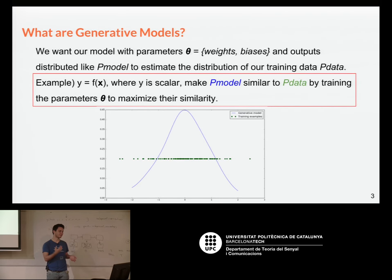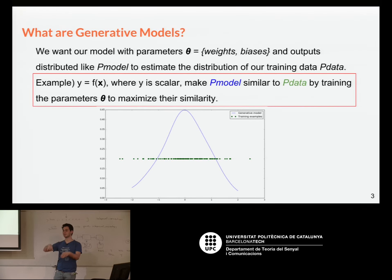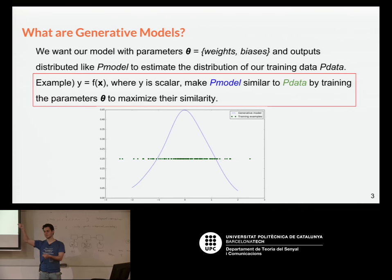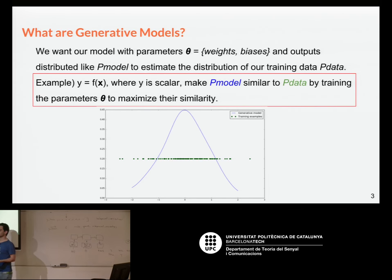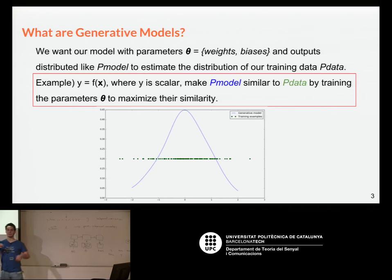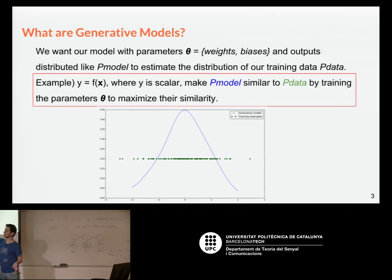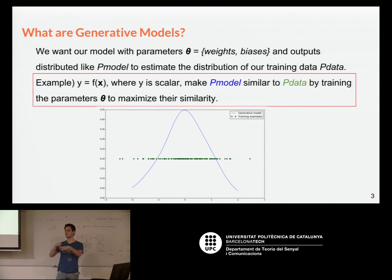Generative models basically estimate a probability distribution of our training data points. These are an unsupervised kind of learning. Up to now, remember we had input-output data points and we made backpropagation to adjust our network to predict those outputs based on those inputs. This way of modeling is based on another approach: we have data points — 1D data points for instance — and they have some distribution, in this case a Gaussian distribution, and we want our model to fit that distribution, changing its weights to make the outputs behave the same way as the training data. We again have weights and biases, and we'll use neural networks to do so because they're very powerful non-linear mapping functions.